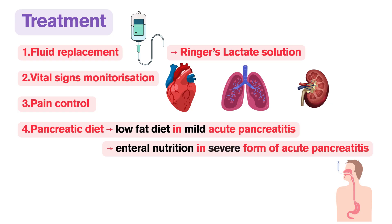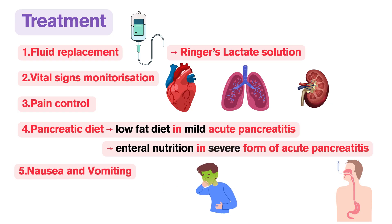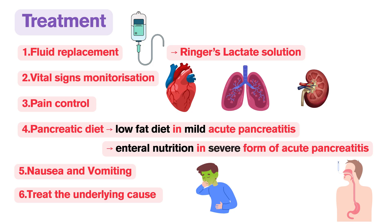Many patients with acute pancreatitis suffer from nausea and vomiting. Anti-emetic medications such as metoclopramide can be used to alleviate these symptoms. Management of the underlying cause is a key point in treatment: if pancreatitis is caused by gallstones, cholecystectomy is recommended once the acute inflammation has resolved; in alcoholic pancreatitis, alcohol abstinence is the key treatment option. Antibiotics are indicated only in cases of proven infected necrosis confirmed by positive cultures, or documented systemic infection.